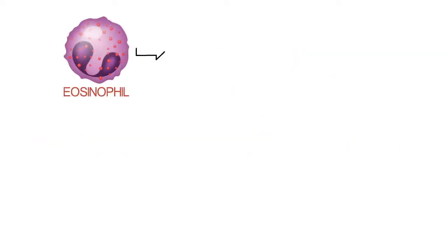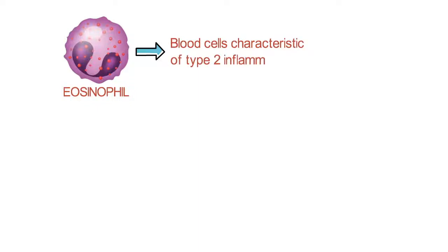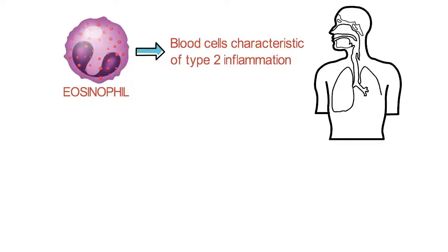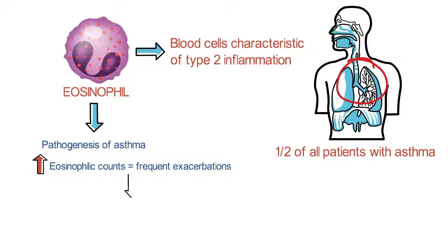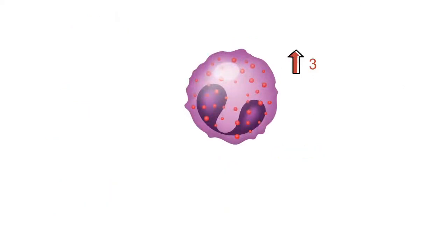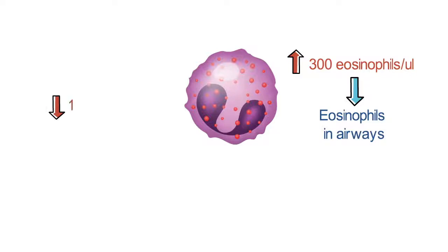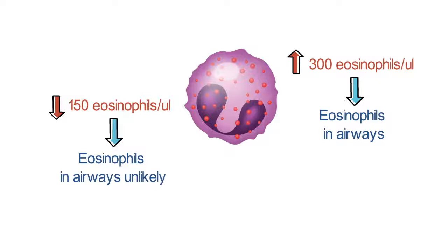Eosinophils are blood cells that are characteristic of type 2 inflammation, and increased eosinophils in the airway and in the blood are present in approximately half of patients with asthma. Eosinophils can contribute to the pathogenesis of asthma, and high eosinophil counts are related to frequent exacerbations and may identify patients with more severe disease. In general, identifying more than 300 eosinophils in the blood is very specific for patients who have eosinophils in the airway, and fewer than 150 eosinophils in the blood are unlikely to have eosinophils in the airway.